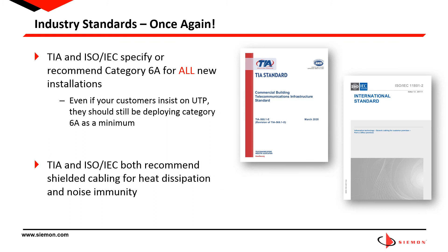So let's take a quick glance at what industry standards recommend. TIA and ISO-IEC recommend Category 6A for all new installations including healthcare, data centers, commercial buildings, and educational facilities in preparation for 10-gigabit-per-second application support. At this point, nobody should be deploying Category 5E or Category 6 for new installations. TIA and ISO-IEC also recommend shielded cabling for heat dissipation and noise immunity. So remind your customers who are running higher power PoE or are planning to, and any customers dealing with noisy environments, that this is the ideal medium.